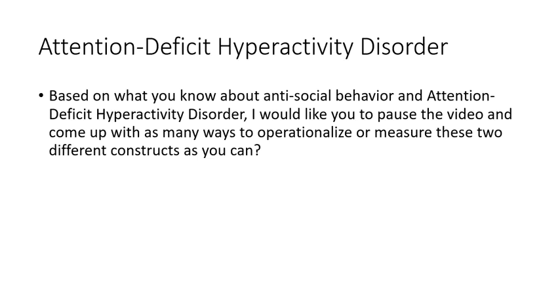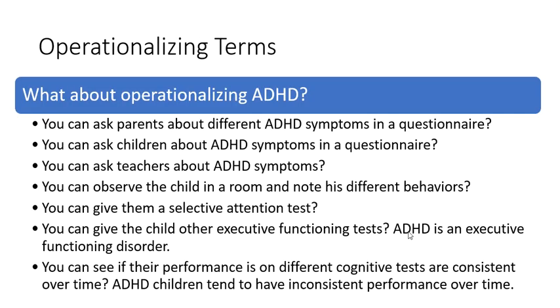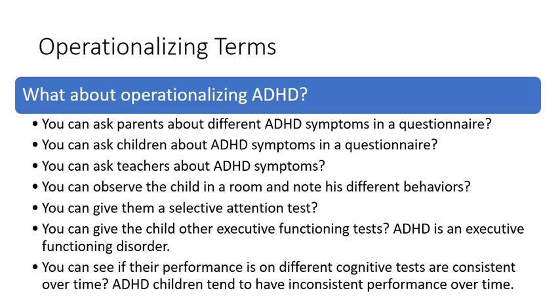Here are some ways to measure ADHD. You can give parents a questionnaire about ADHD symptoms, ask the child about their own symptoms, or ask teachers what they observe about attention and hyperactivity. You can observe the child in their classroom, at home, or in different settings. You can give them a selective attention test or a test of executive functioning, since ADHD is an executive functioning disorder. You can also look at whether their performance on cognitive tests is consistent over time, since people with ADHD can do much better when they're paying attention and much worse when they're not.